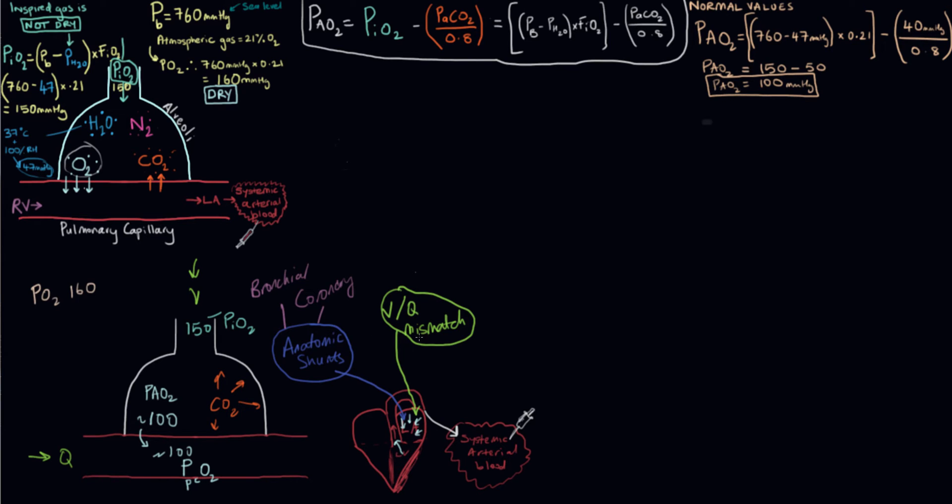Those are two sources of poorly oxygenated blood entering the left atrium. What that does is it lowers the PO2 slightly in the blood leaving the left ventricle, going out to the aorta into the systemic arterial system. If we took a blood sample here, called an arterial blood gas out of an artery, we can measure the partial pressure of oxygen in the arterial blood, the PaO2.